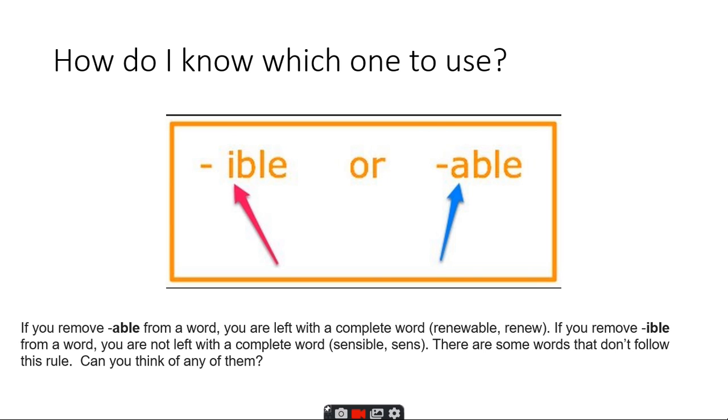But how do you know which one to use? If you were to take -able from a word, you'd be left with a complete word. For example, the word renewable - if you take off a-b-l-e, the suffix, you end up with renew.